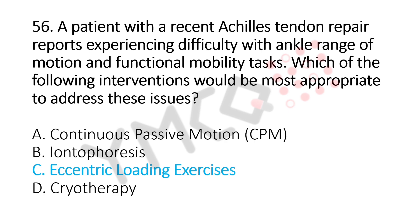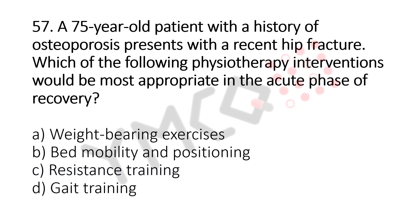Now let's move to question number 57. A 75-year-old patient with a history of osteoporosis presents with a recent hip fracture. Which of the following physiotherapy interventions would be the most appropriate in the acute phase of recovery? Option A, weight-bearing exercises. Option B, bed mobility and positioning. Option C, resistance training. Option D, gait training. And the answer is Option B, bed mobility and positioning.